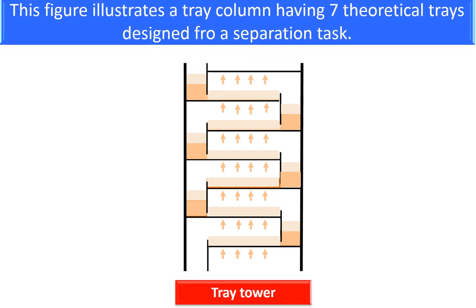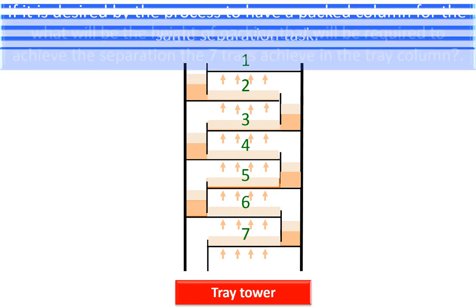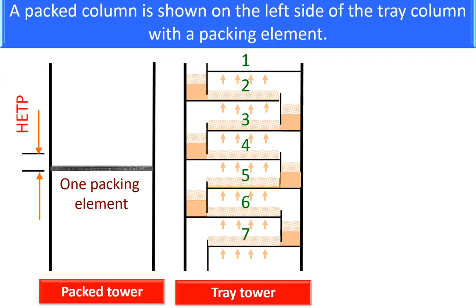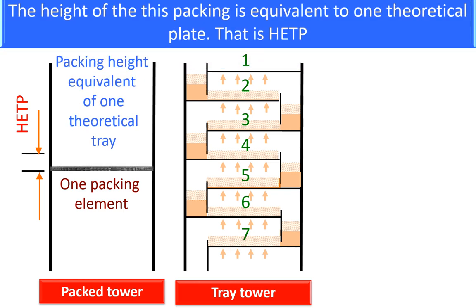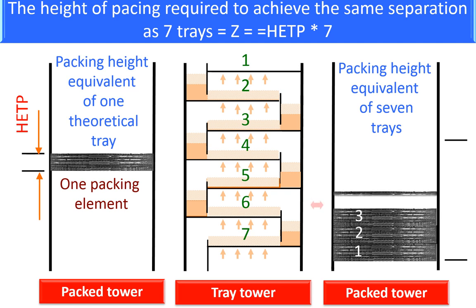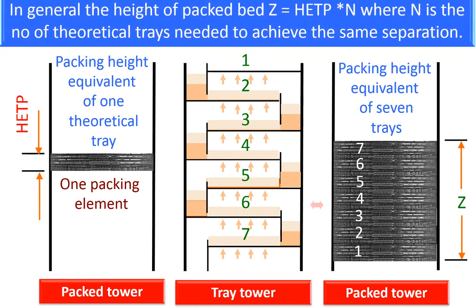This figure illustrates a tray column having seven theoretical plates designed to do a separation task. If it is desired to have a packed column for the same separation task, what will be the height of packing required? A packed column is shown with a packing element whose height equals one theoretical plate, that is HETP. The height of packed bed Z equals HETP times the number of theoretical plates, which is seven times HETP. In general, the packing height Z is equal to HETP times N.